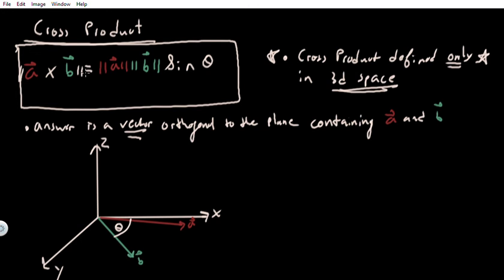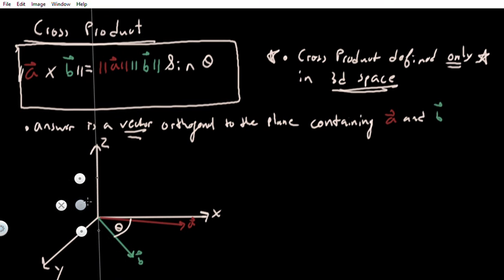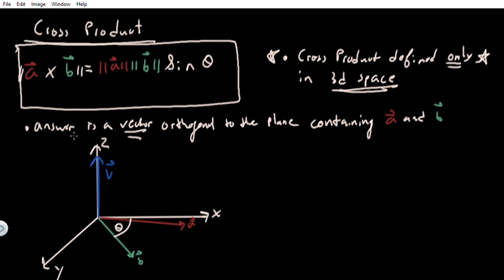Remember that term from a couple videos ago? So if you were to take the dot product of the vector you get from the cross product of a and b, you would get zero. Let's say the cross product is vector v — this vector would be orthogonal to the plane containing a and b. In this case I drew it along the z-axis because it's easier to visualize. This vector v equals the cross product of vector a with vector b, and its magnitude is calculated by the magnitude of a times the magnitude of b times the sine of the angle between them.